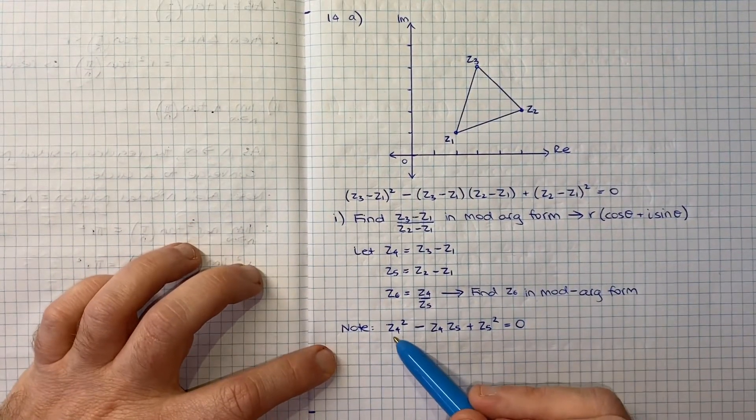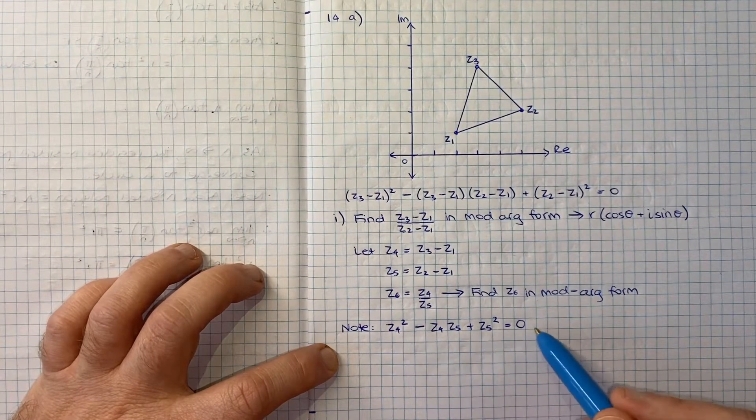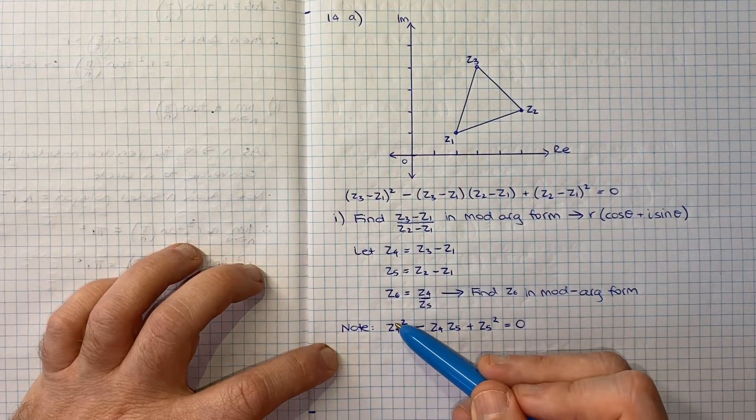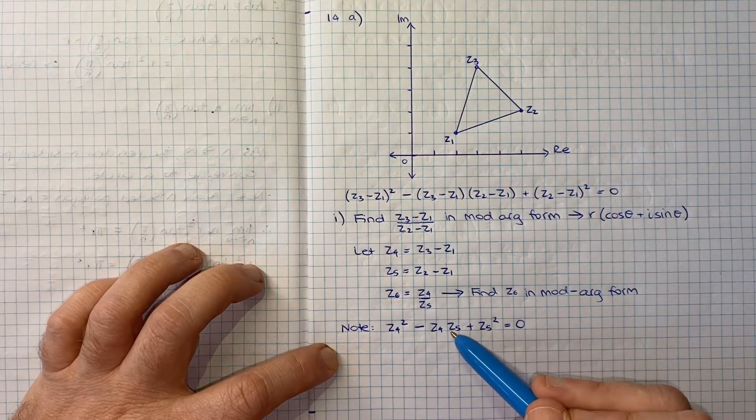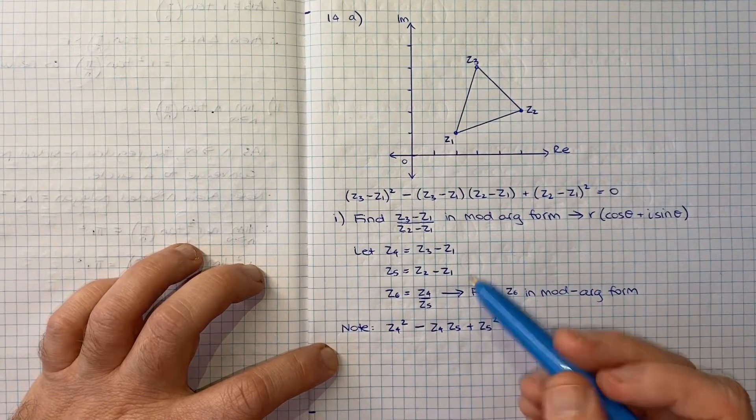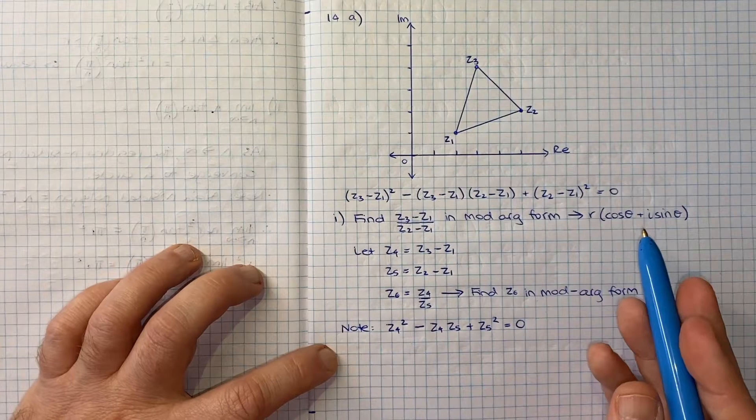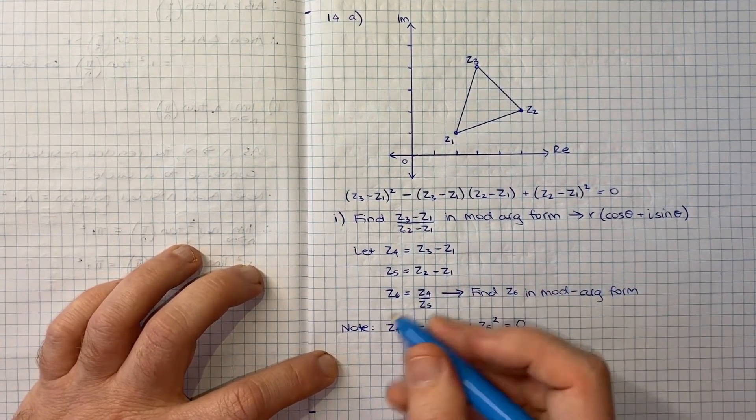What would be nice is if we had this in a form that had Z6s in it, because Z6 is what we really care about. If you look at this, we could probably get there if we divide everything by Z5 squared, because this would then become Z4 squared over Z5 squared or Z6 squared. So let's do that.